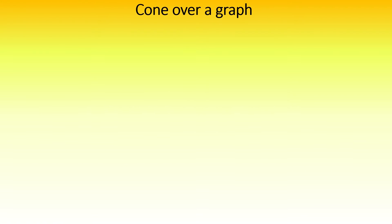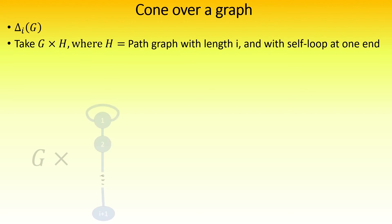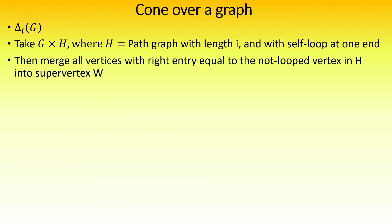The i-cone over a graph g, written as delta sub i of g, is formed by taking the tensor product of g and h, where h is a path graph of length i with a self-loop at one end, and then merging all vertices with right entry equal to the non-looped vertex in h into a vertex w, known as the super vertex.